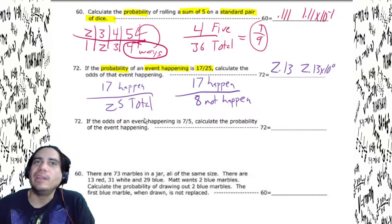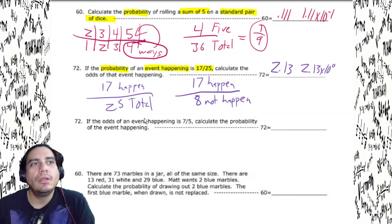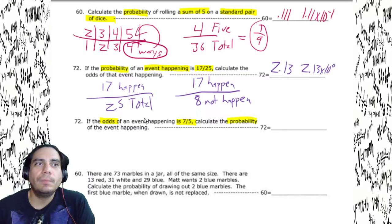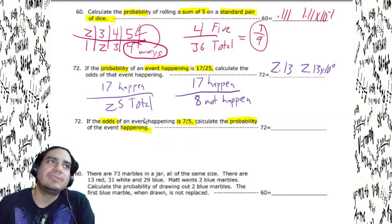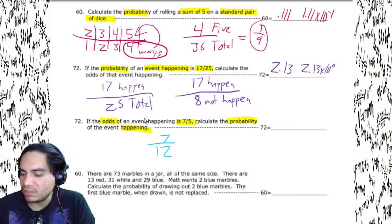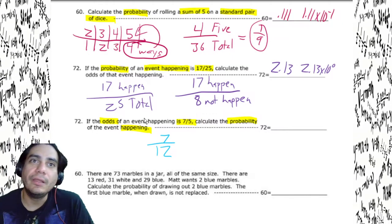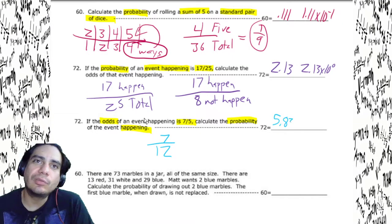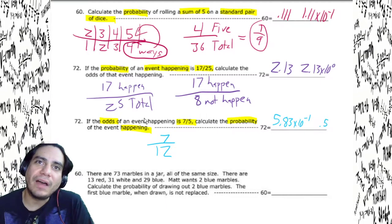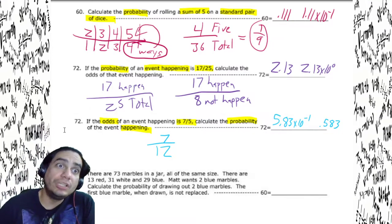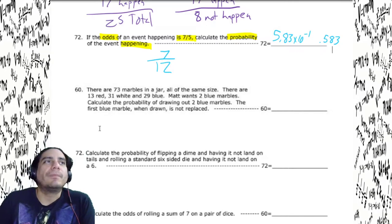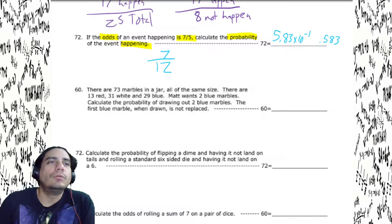Odds of an event are seven to five. Calculate the probability of the event happening. The total is seven plus five equals 12. So it's seven out of 12. Seven divided by 12 gives us 5.83 times 10 to the negative one, or 0.583.